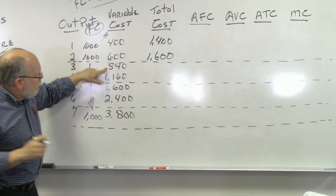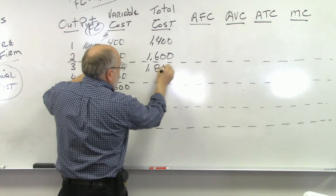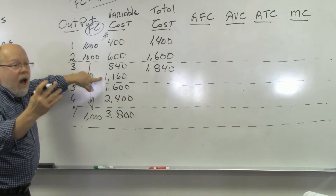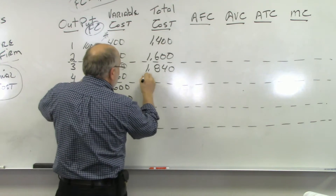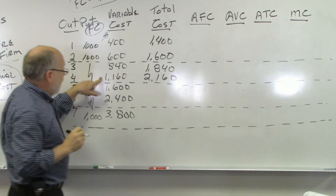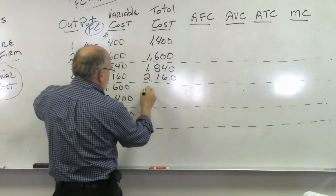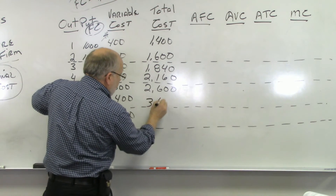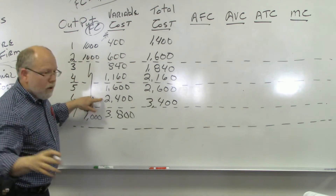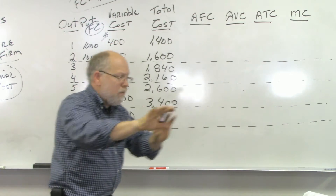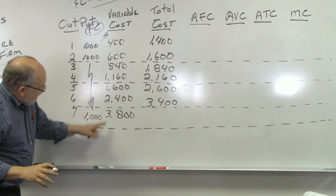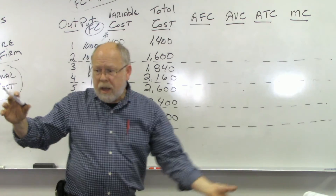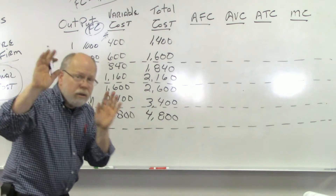Adding $1,000 to the variable cost at output 3 gives $2,160. At output 4 it's $2,600. Adding the fixed cost of $1,000 at output 5 gives $3,400. At output 6 that's $4,800. You all can do this — it's not rocket science. Now let's go to average fixed cost.